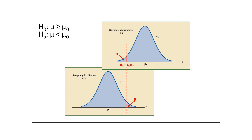On the upper graph, the x-bar value corresponding to the upper limit of our lower tail is z alpha, a standard error below the sampling distribution mean mu0. On the lower graph, the x-bar value corresponding to the lower limit of our upper tail is z beta standard errors above the sampling distribution mean mu b. Those two values are equal to one another. Solving for the standard error, the standard error of the mean equals the population standard deviation divided by the square root of the sample size.